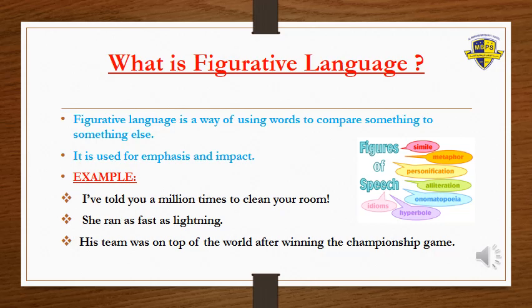For example: 'I have told you a million times to clean your room.' Instead of saying 'many times,' we use 'a million times.' Another example: 'She ran as fast as lightning.' And: 'His team was on top of the world after winning the championship game.'